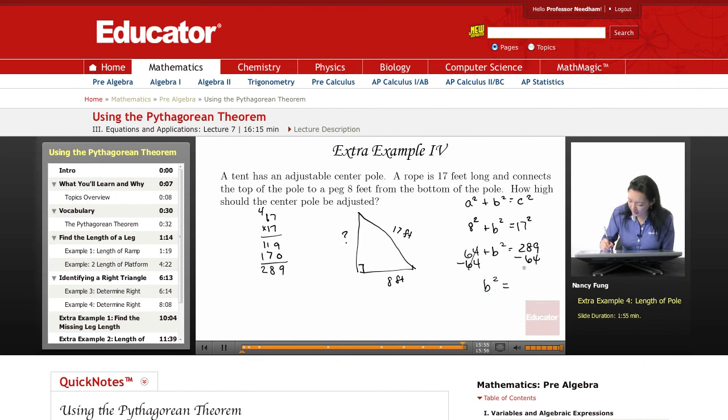b² equals... 9 minus 4 is 5, 8 minus 6 is 2, and 2. So b² = 225. The square root of 225 equals b, and b equals 15.